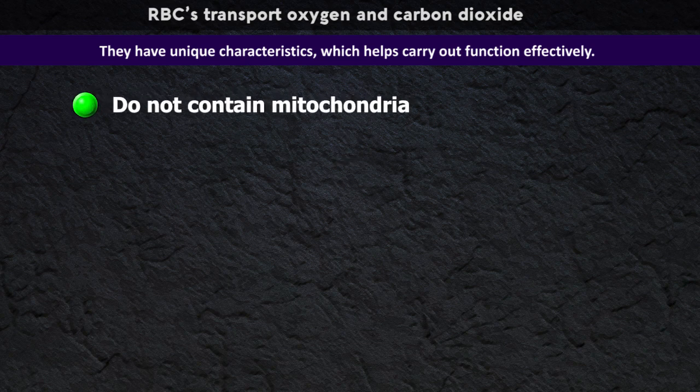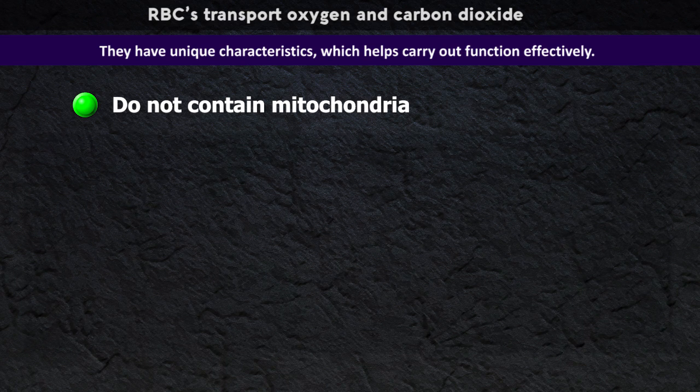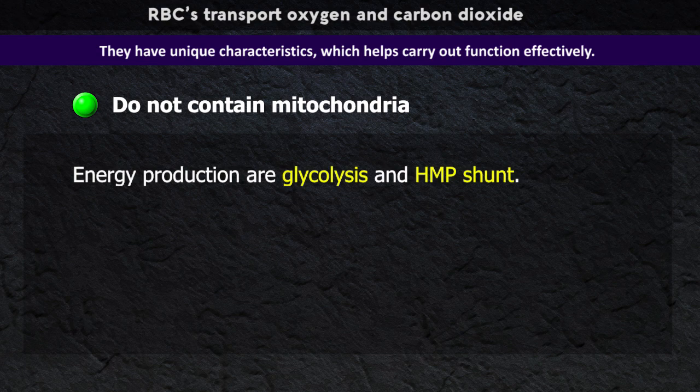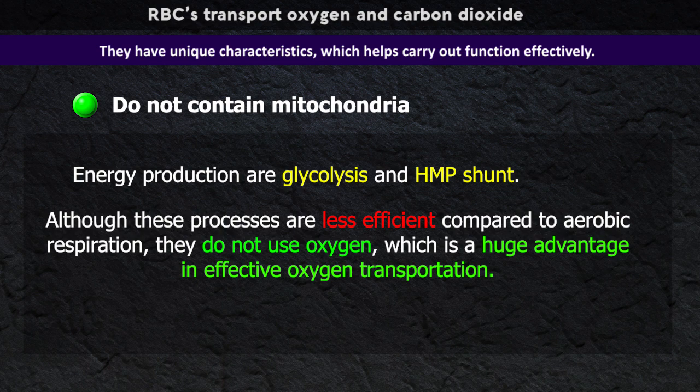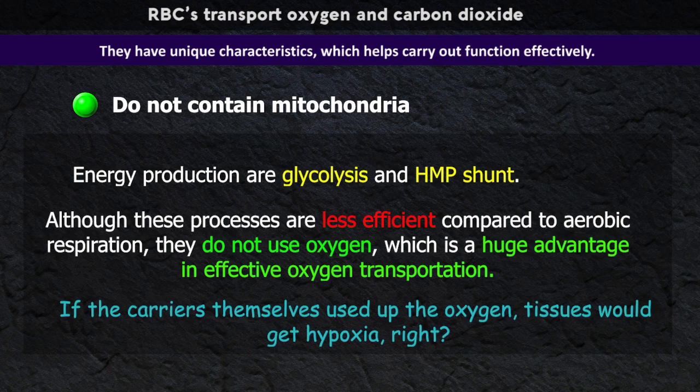Unlike other cells in the human body, they do not contain mitochondria, which means their only means of energy production are glycolysis and HMP shunt. Although these processes are less efficient compared to aerobic respiration, they do not use oxygen, which is a huge advantage in effective oxygen transportation. If the carriers themselves use the oxygen, tissues would get hypoxia, right?